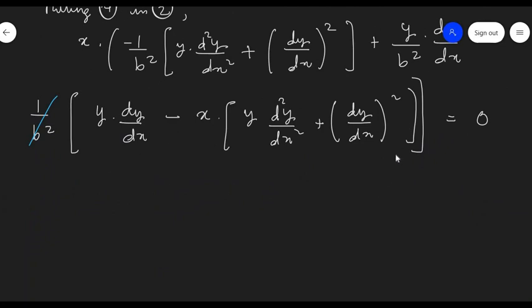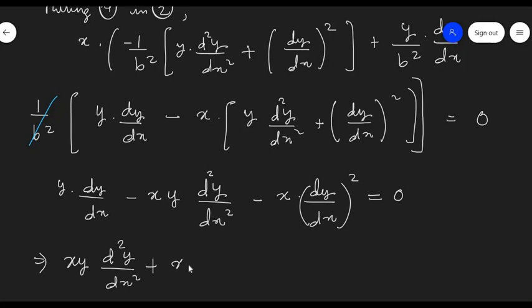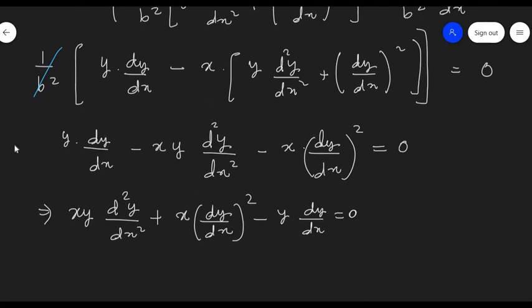Since 1 / b² is a non-zero constant, we can cancel it. We have now eliminated both arbitrary constants. The final differential equation is: xy · d²y/dx² + x · (dy/dx)² − y · dy/dx = 0. And this is the required differential equation.